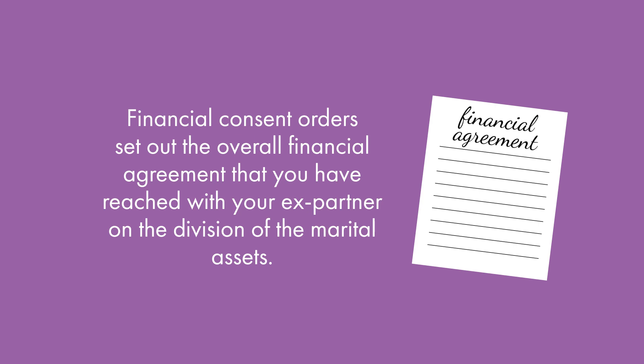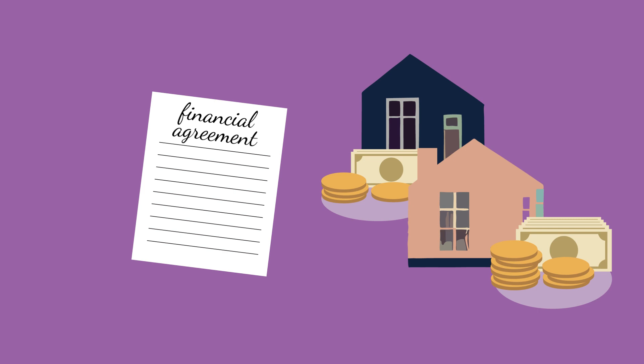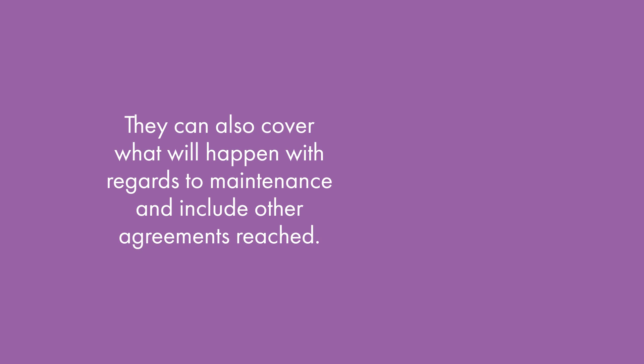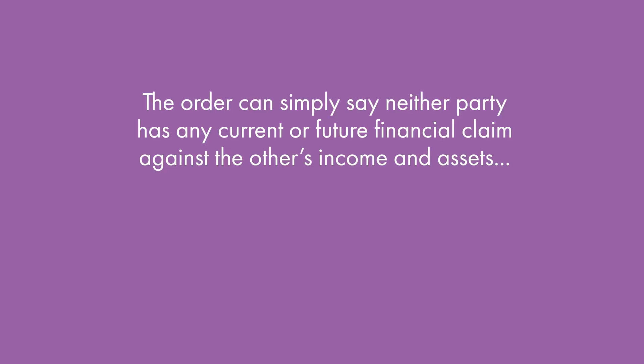Financial consent orders set out the overall financial agreement you have reached with your partner on the division of the marital assets. The order can cover what will happen to certain assets, such as the matrimonial home or other property, savings and investments, pensions, or any other capital assets you may have. They can also cover what will happen with regards to maintenance and include other agreements reached, such as what will happen to the contents of the family home, cars, jewellery and other items. In some cases, if appropriate, the order can simply say that neither party has any current or future financial claim against the other's income and assets, achieving what is often referred to as a clean break.